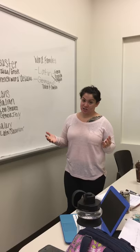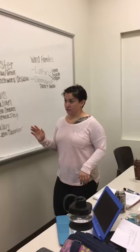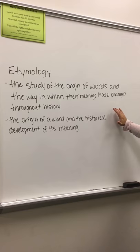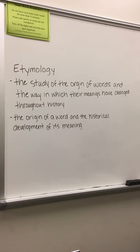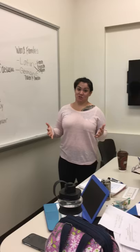So let's begin with the definition. Etymology. The two definitions are: it's the study of the origin of words and the way in which their meanings have changed throughout history. Also, the origin of a word and the historical development of its meaning. Words' meanings can change over time.